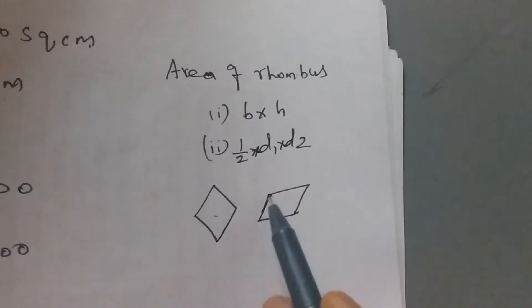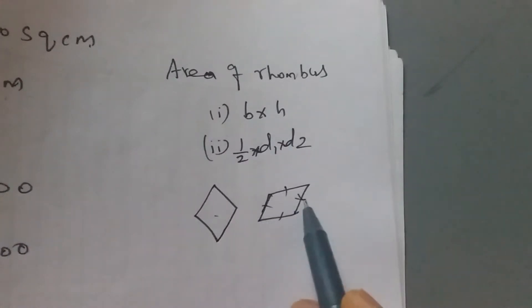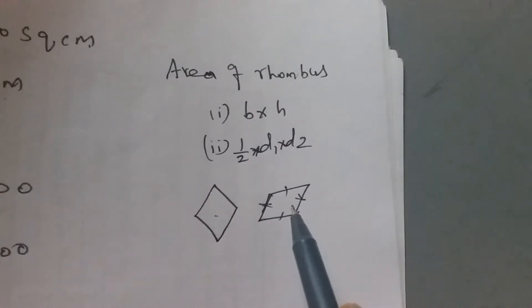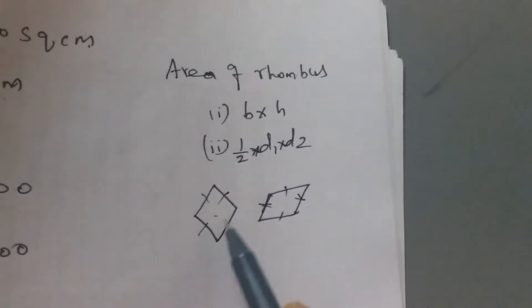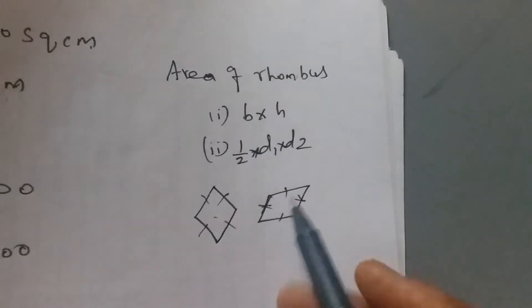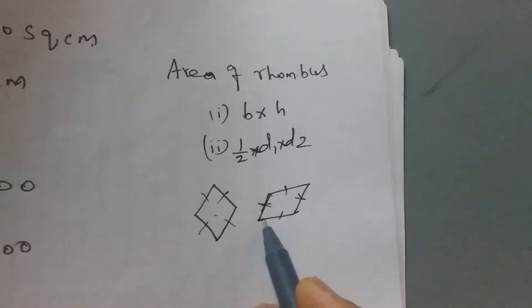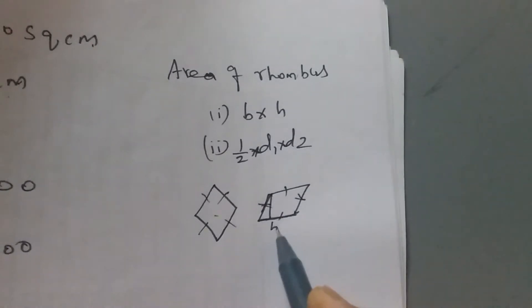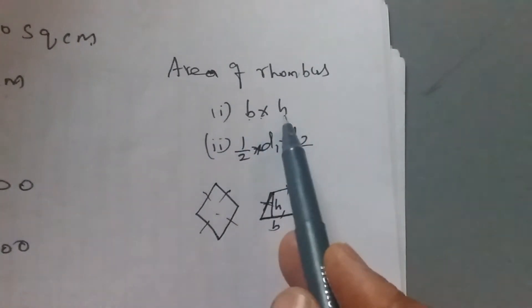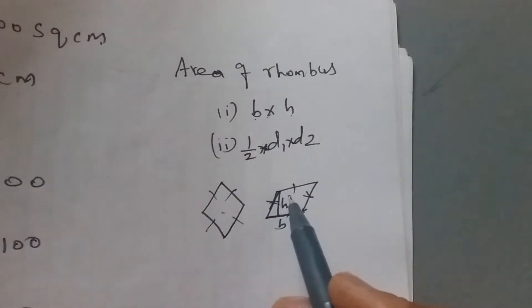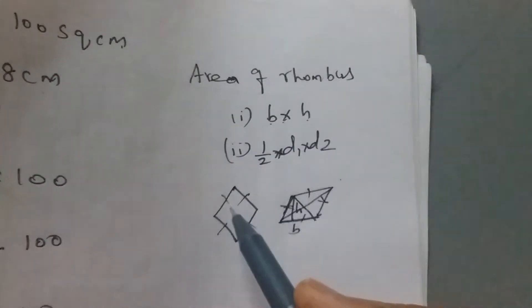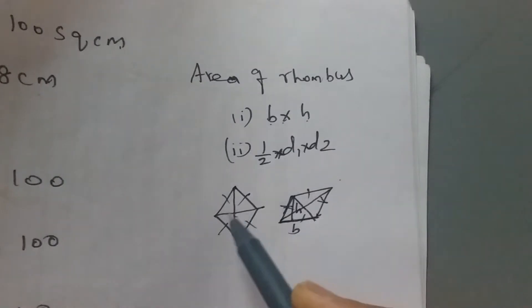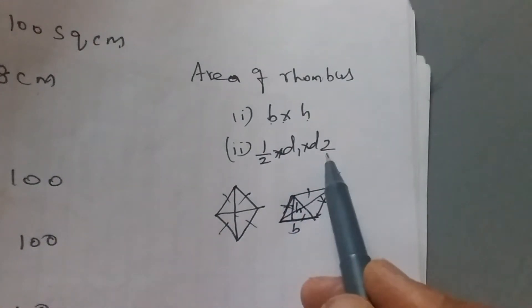A rhombus can be drawn in the diamond shape or like a parallelogram, but in a parallelogram only opposite sides are equal whereas in a rhombus all four sides are equal. If you are given the base and the height, the formula is base into height. A diagonal is a line joining the opposite vertices. If you are given diagonal one and diagonal two, the area is half into d1 into d2.